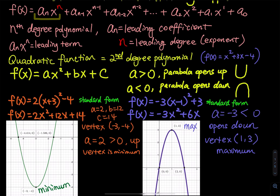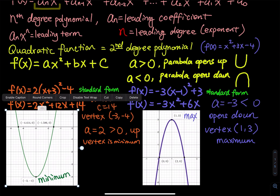The first line is called standard form. From the standard form, you can tell that a equals 2, and you can identify the vertex — we'll talk about that in the next video. In this video, graph the function f of x equals 2x squared plus 12x plus 14 using a graphing calculator. You can see the graph shows a parabola that opens up. The coefficients are: a equals 2, b equals 12, c equals 14.